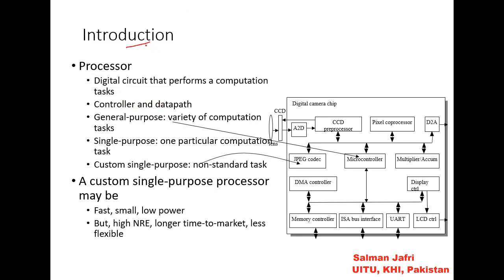As an introduction, a processor is a digital circuit that performs a computation task. As we have discussed before, all processors consist of two parts: the controller and the data path. What do general-purpose processors do? They do a variety of computation tasks, hence they are general in nature, for example the microcontroller. On the other hand, single-purpose processors are designed for one particular computation task. By one particular computation task, it can be a specialized algorithm. And then what is a custom single-purpose processor? Non-standard task.